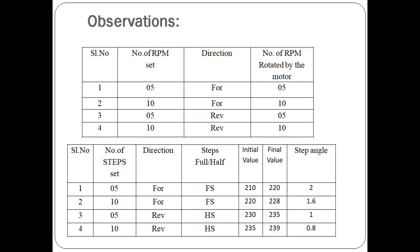There are two tabular columns here — one with respect to RPM: how much RPM we set, the direction, and the number of RPM rotated by the motor. As mentioned, there are two modes for the stepper motor: one is the speed (RPM) at which it rotates, and the other is how many steps it rotates. Using the control circuit, the user can set either RPM mode or number of steps mode.